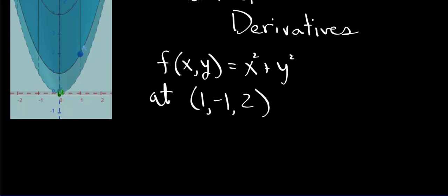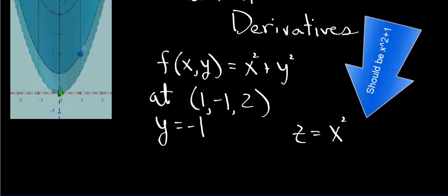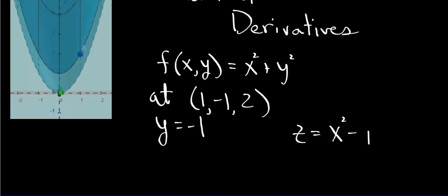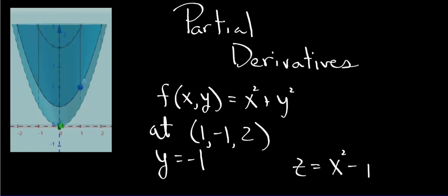Here's what we could do. We're letting y equal negative 1 according to this, because we want the tangent at that point. Then we are looking at this function here. We're looking at z equals x squared plus — well, x squared minus 1. What I've done is I've graphed f of xy equals x squared plus y squared, and I've cut the graph with a plane y equals negative 1. So really, you can think of what we're looking at as this parabola here.